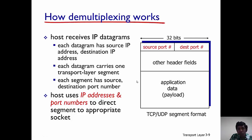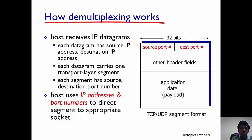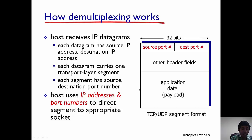So how does demultiplexing work? The host receives IP datagrams. Each IP datagram has a source IP and a destination IP, and also a source port and a destination port. The term 'datagram' refers to a packet at the network layer, while 'segment' is the term for a packet at the transport layer. The segment has a source port and destination port, while the datagram has source and destination IP addresses.